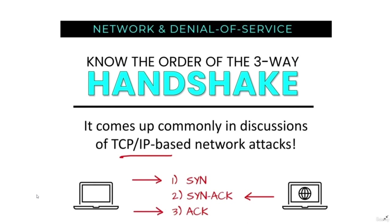When dealing with network attacks, it is very important to know the order of the TCP three-way handshake, as it comes up commonly in discussions of TCP/IP-based network attacks. For example, the SYN flood attack exploits the three-way handshake as follows: the attacker floods a victim's site with SYN packets; the victim responds to each SYN packet with a SYN-ACK packet; the attacker does not respond with the final ACK, leaving the victim waiting. The attacker continues to send SYN frames with a spoofed address, causing the victim to allocate resources for each inbound session request until so many resources are consumed that the victim cannot process legitimate TCP/IP session requests.